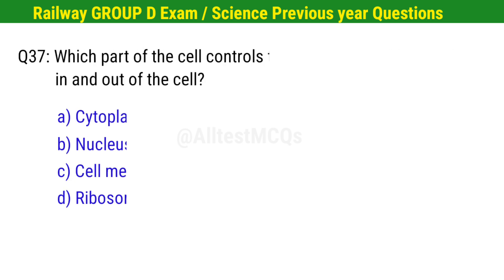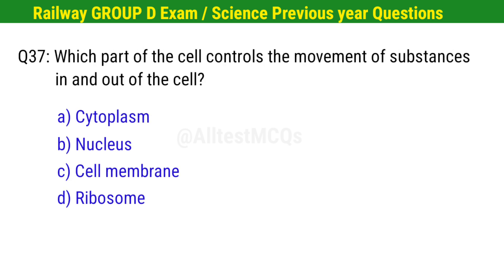Question No. 37. Which part of the cell controls the movement of substances in and out of the cell? Right option is C. Cell membrane.